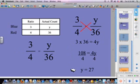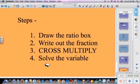So let's just review all the steps that you need to do when you're solving these problems. Step 1 is draw the ratio box. Step 2 would be write out the fraction. Step 3 is cross multiply. And then step 4 is solve the variable. So again, this is all review. Hopefully this won't take you very long, and enjoy your math day.